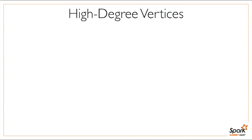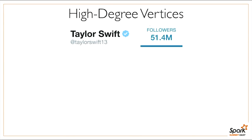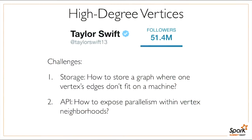The first challenge is high-degree vertices. Real-world graphs have many instances of these—Taylor Swift has, I think, 54 million followers on Twitter. GraphX has to store the graph carefully to handle these kinds of vertices. For example, if you store the graph using adjacency lists, that won't work because the edges adjacent to a single vertex may not even fit on one machine. GraphX also has to be careful with the API because even a single vertex neighborhood might be too big to iterate over, so you have to break up the graph into parallel units that are smaller than one vertex neighborhood.